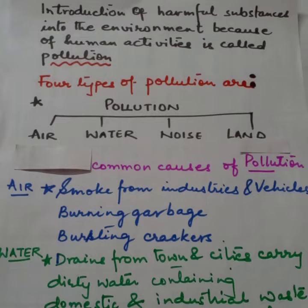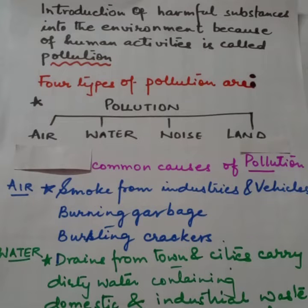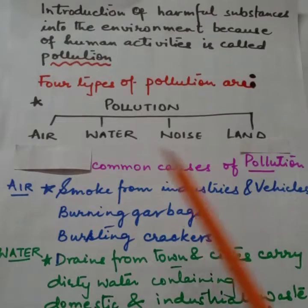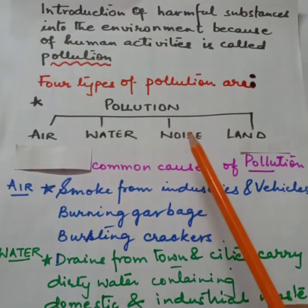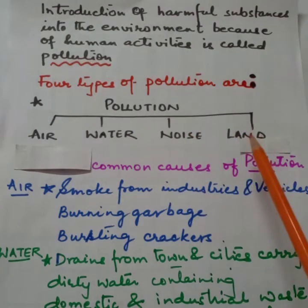Pollution क्या है? जब इंसान अपने कामों से गंदगी फैलाते हैं environment में अपने आसपास, तो उसे pollution कहते हैं। Pollution चार तरह के होते हैं: हवा का pollution, पानी का pollution, आवाज का pollution और लैंड का pollution।